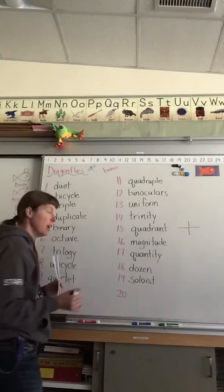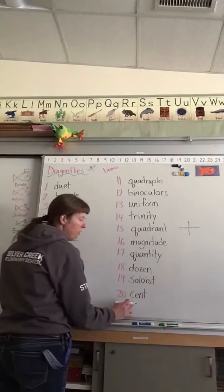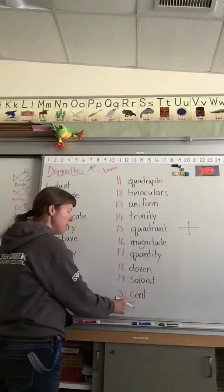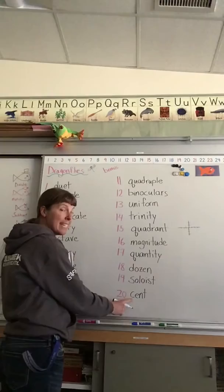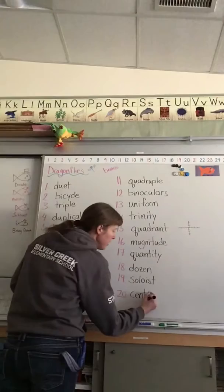And number twenty, century. You might have heard of a cent before. There's a hundred cents in every dollar, because the word 'cent' means a hundred. Notice it's spelt with a C because the E makes the C say 'ss'. So cent-yur-y is a hundred years.